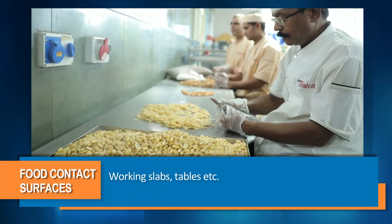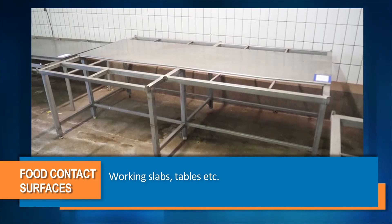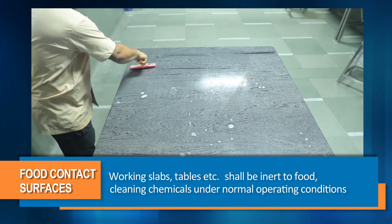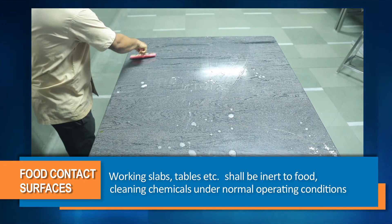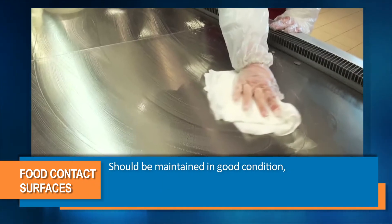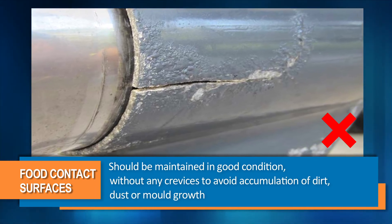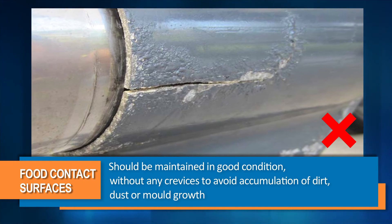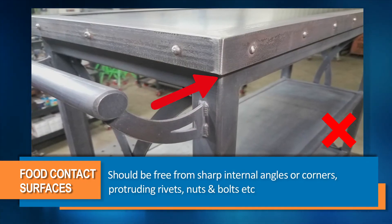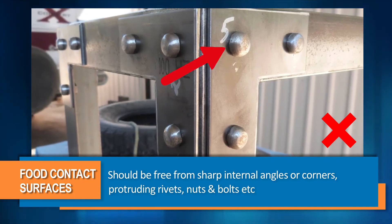All food contact surfaces such as working slabs, tables, etc. shall be inert to food and cleaning chemicals under normal operating conditions. They should be maintained in good condition without any crevices to avoid accumulation of dirt, dust or mold growth. They should be free from sharp internal angles or corners, protruding rivets, nuts and bolts, etc.